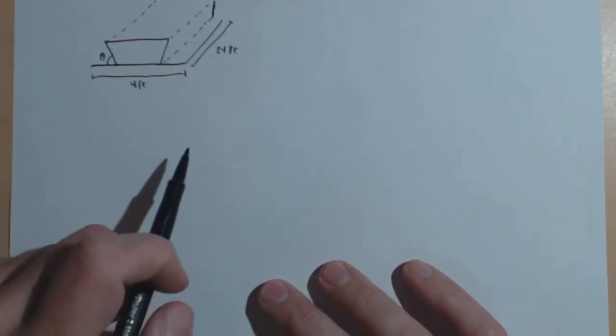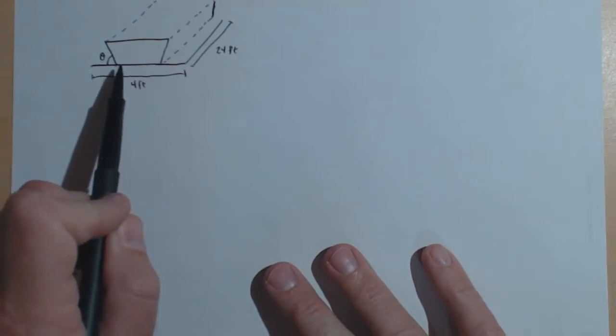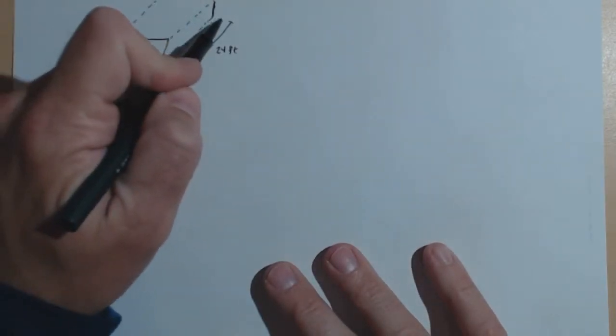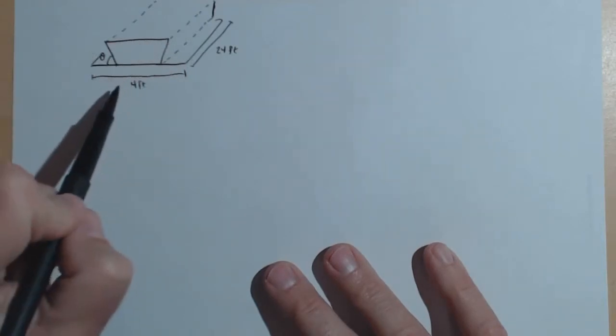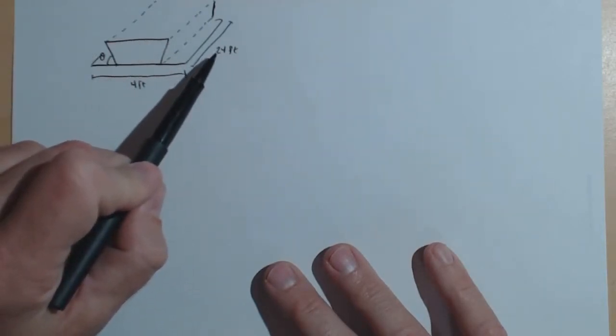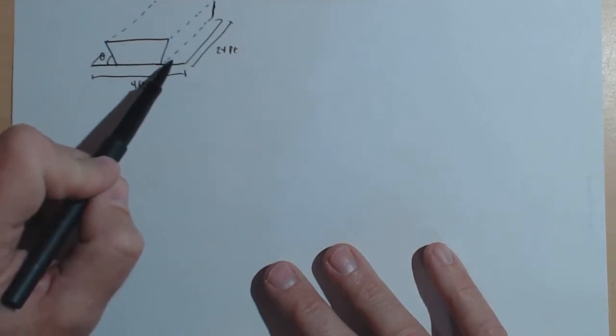In this video, we're going to do optimization on the volume of a trough whose cross-section is a trapezoid. We're starting off with a sheet of metal that's 4 by 24, and the two edges are going to get folded up to make the trough.